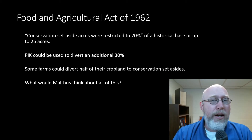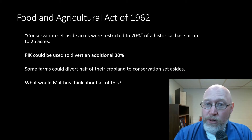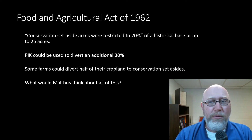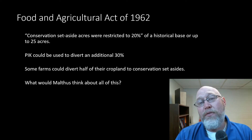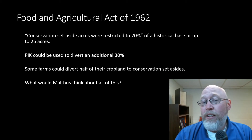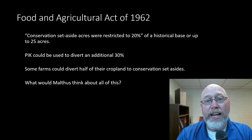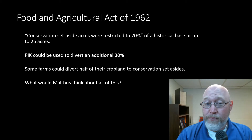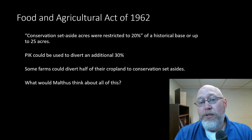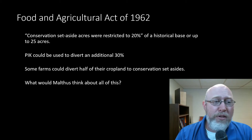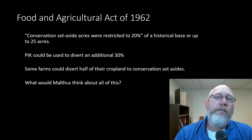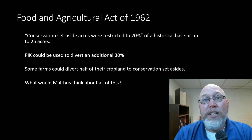The conservation programs were interesting. Conservation set-aside acres were restricted to 20 percent of historical base or up to 25 acres. That means a farmer could put 20 percent of their historical base into a set-aside, then an additional 30 percent into a set-aside and get paid through the PIK program. It was possible for some farms — especially smaller farms — to divert half their cropland into a set-aside. What would Malthus think? He said we'd starve, yet here in the 1960s we've got so much food we're literally paying farmers not to plant.